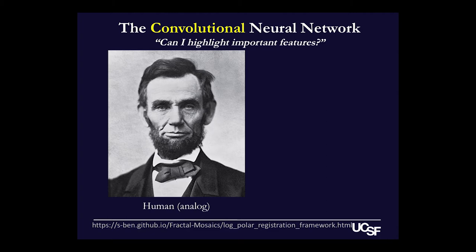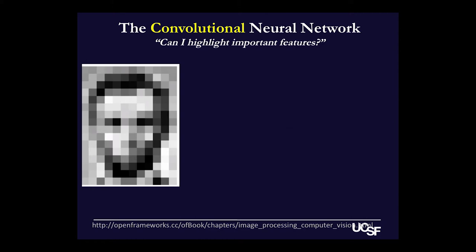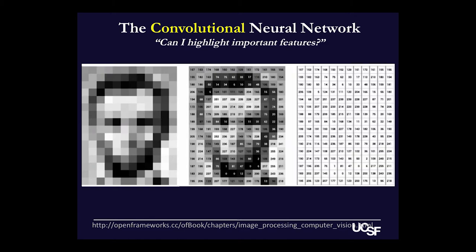So how do we do this with a computer algorithm? Here's a picture of someone you know. Your visual system processes the features and you very quickly say this is a picture of Abraham Lincoln. But if you take a photo, that image is recorded by the phone as a grid of pixels — blocks where each block is a single color or a single level of gray. This isn't really what the computer sees either. Each of these pixels has a number associated with it that describes how light or dark it is. What the computer actually sees is a grid of numbers.